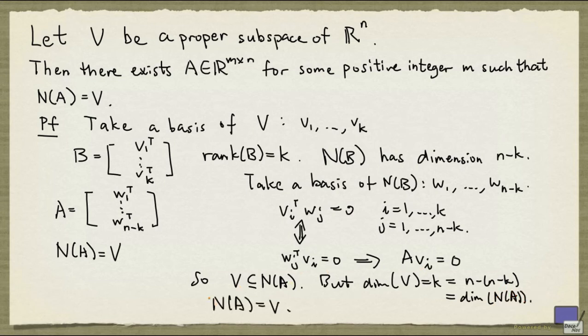And so we can conclude that the null space of A is the same as V, because V is a subspace of the null space of A having the same dimension.